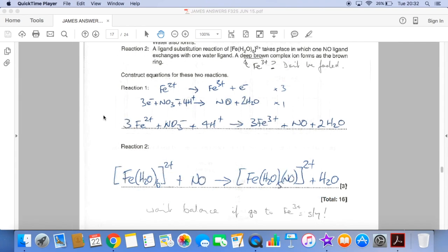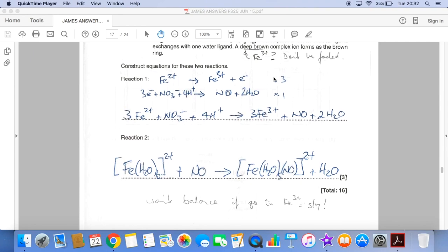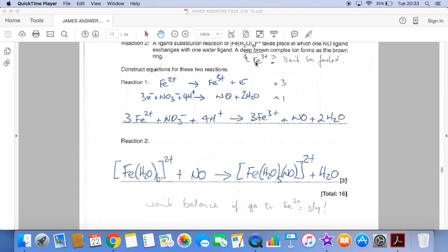And reaction number two now. Ligand substitution reaction of the Fe(H2O)6 2+ takes place. One NO ligand exchanges with one water ligand. And the deep brown complex ion forms. So if we turn that into an equation, Fe(H2O)6 2+. We need to basically swap one of the waters with an NO. So there's the water that's come out. And there's the NO that's gone in. Now at first I was thinking deep brown iron(III) question mark. It's not that. The equation won't balance if you have 2+ and 3+ there. So the actual charge of this complex ion is still 2+.